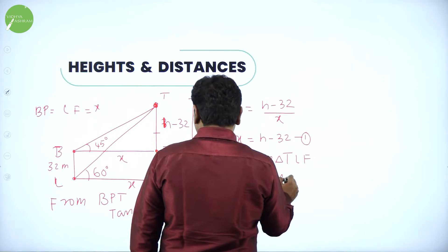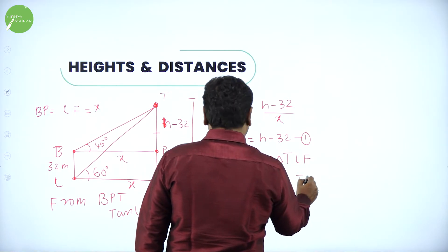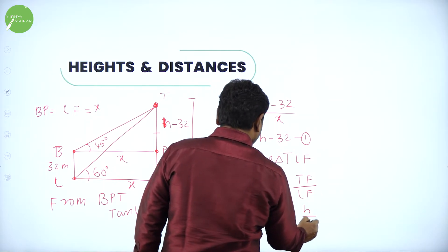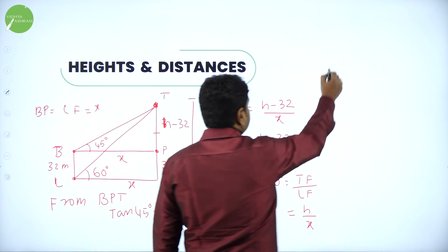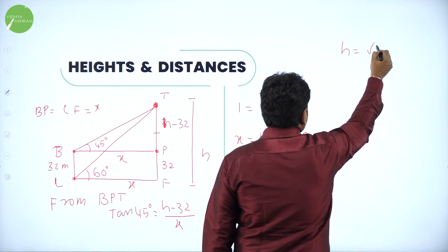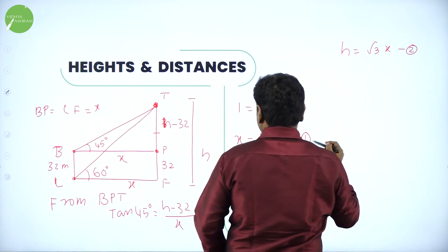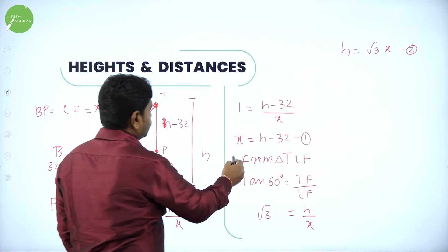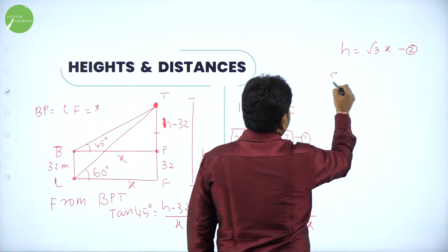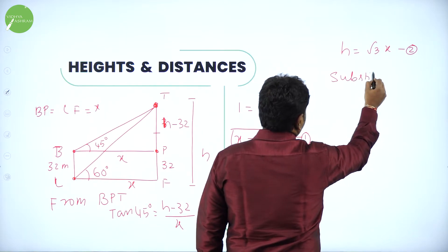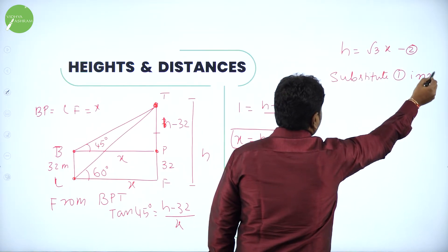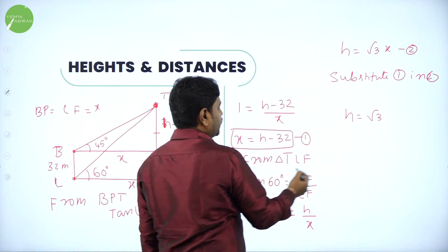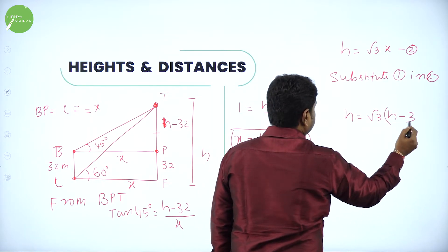From triangle TLF, apply tan 60. Tan 60 equals TF divided by LF, where TF is the height H and LF is x. Tan 60 is root 3, so rearranging gives H equals root 3 times x. Call this equation 2. Substituting equation 1 into equation 2: H equals root 3 times (H minus 32).